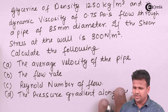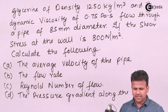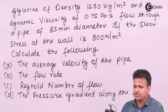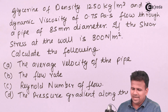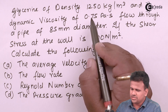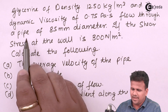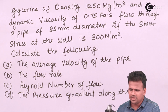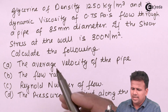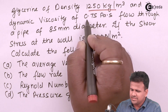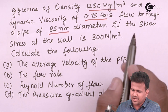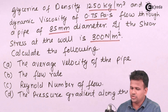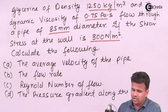We have a problem which says that glycerin has a density of 1250 kg per meter cube and dynamic viscosity of 0.75 Pascal seconds, and flows through a pipe of 85 mm diameter. If the shear stress at the wall is given as 300 Newton per meter square, we have to calculate all of the following.